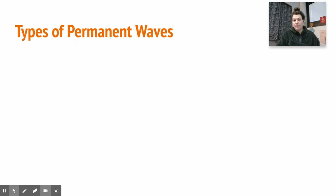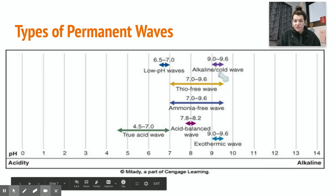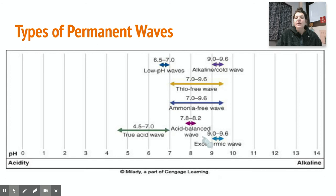So what are the different types of perm waves? You can have a low pH wave, an alkaline cold wave, or an exothermic wave. The exothermic and alkaline cold wave are opposite: the exothermic releases energy or heat, while the cold wave does not. There is also an ammonium-free wave, which means there's no base substance. An acid-balanced wave, a true acid wave, and a low pH wave.